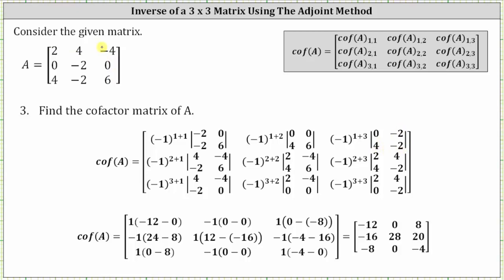The remaining cofactors are already listed, so let's simplify the first row. In row one column one, negative one squared is positive one, and the determinant is negative 12 minus zero, or negative 12. So the entry is negative 12. For row one column two, negative one cubed is negative one, and the determinant is zero minus zero, giving an entry of zero. For row one column three, negative one to the fourth power is positive one, and the determinant is zero minus negative eight, giving an entry of eight.